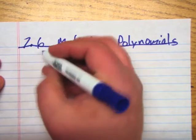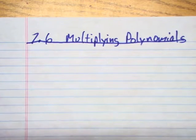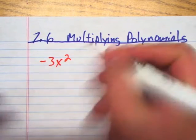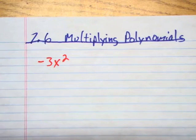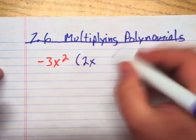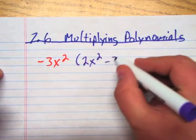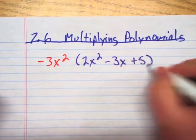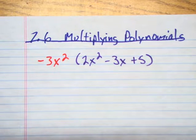Let me give you an example here. So if I say negative 3x squared times 2x squared minus 3x plus 5. That's what I kind of showed you how to do once already. What we do is we use the distributive property, and we're going to push that 3x squared through each term.